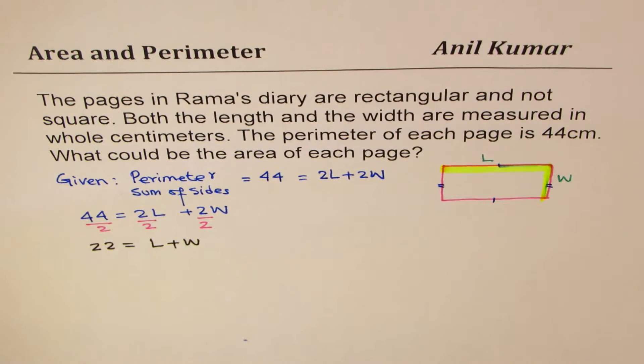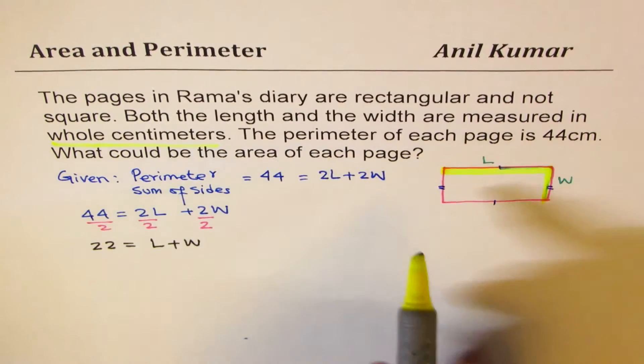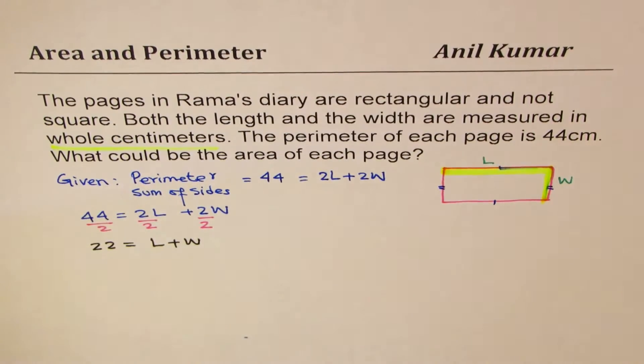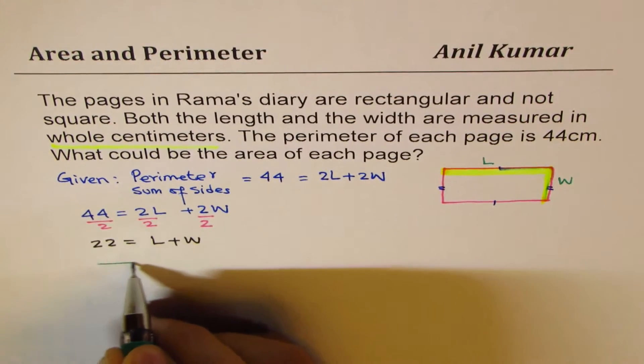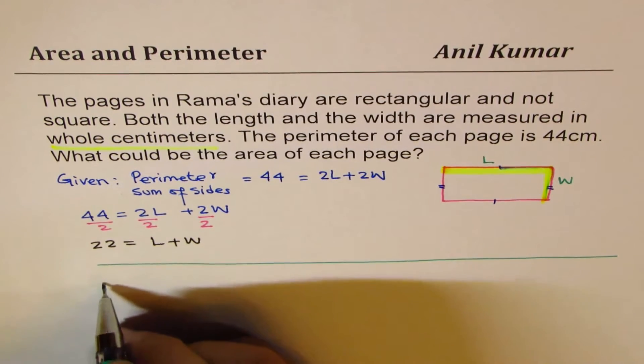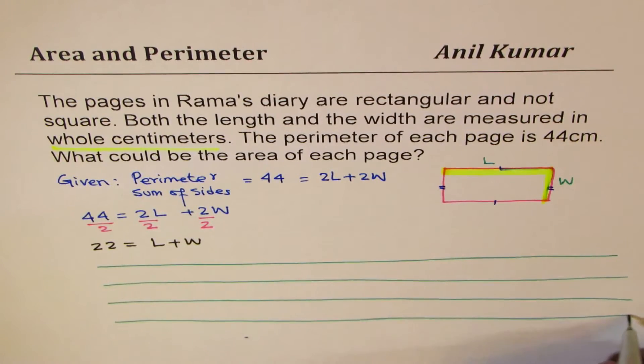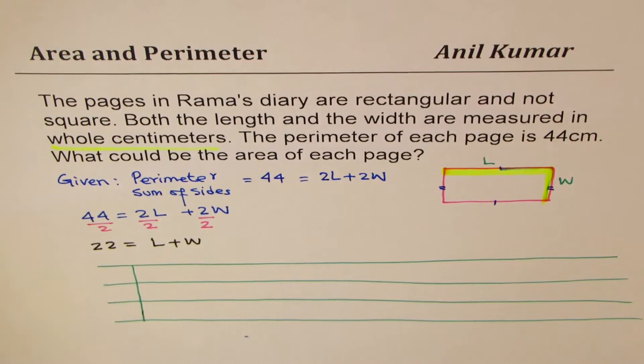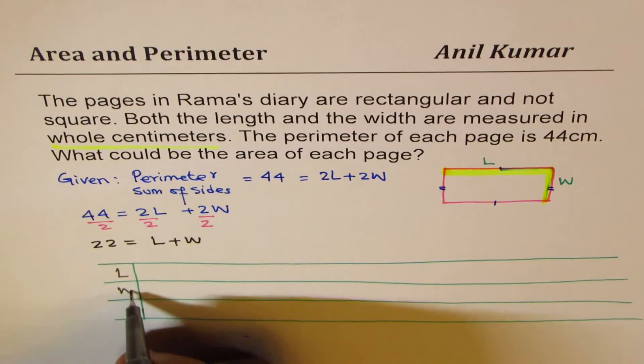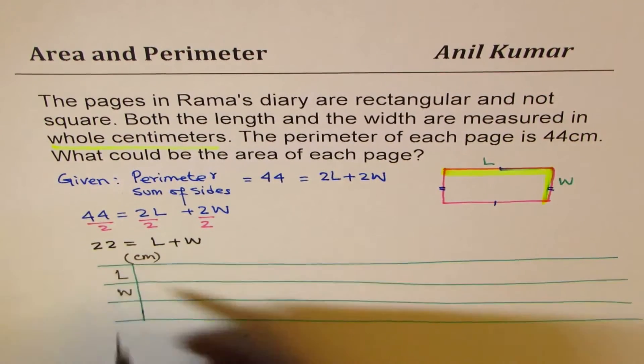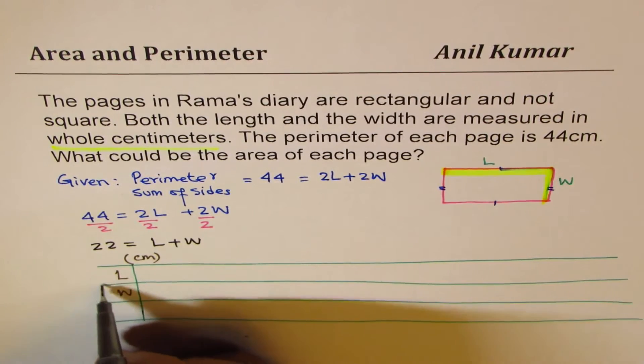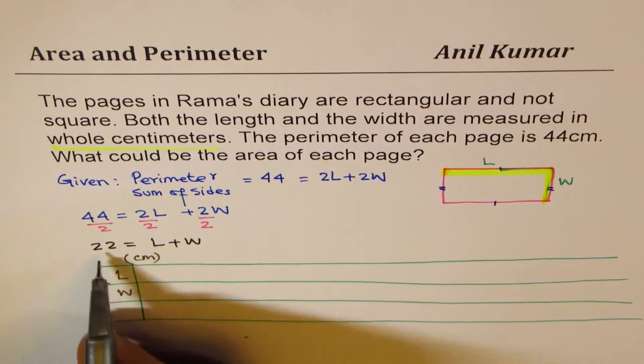Now this is a simple equation and with this equation we can find all whole numbers, all whole centimeters, which will give us 22. So what I will do now is make a table. In this table, I will provide you with possible values of length and width. All are in centimeters. So that when you add them, you get 22.